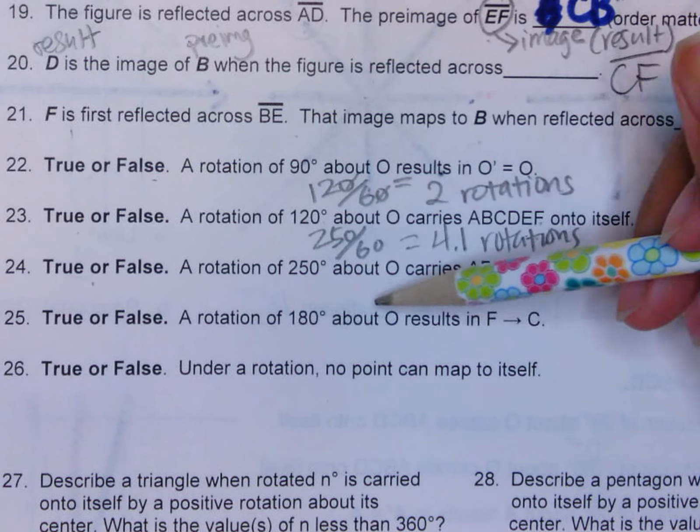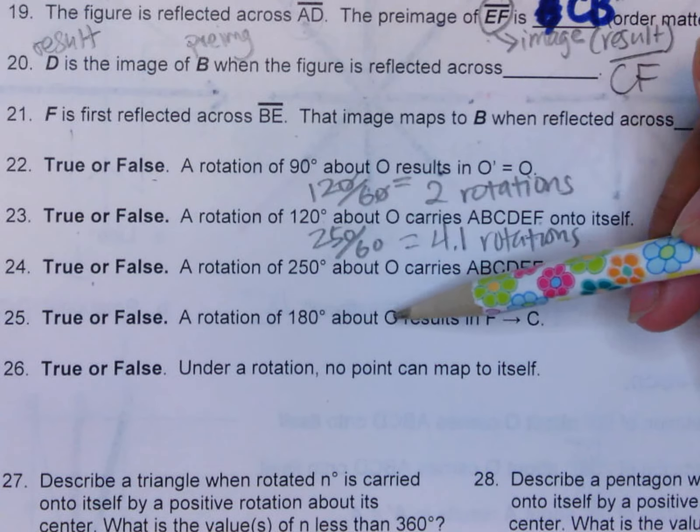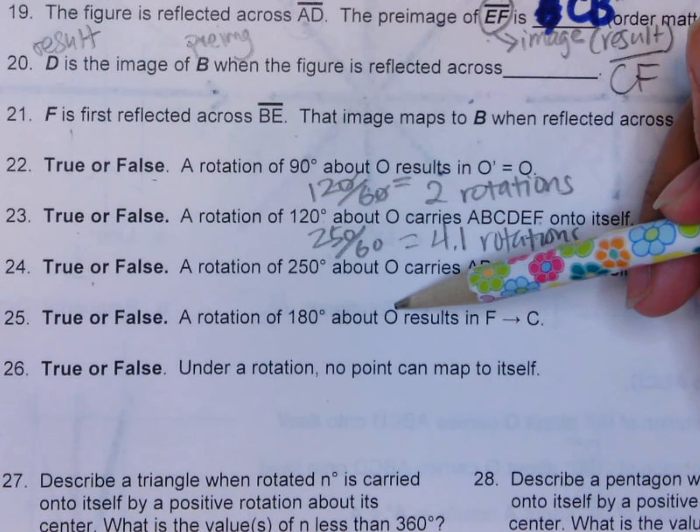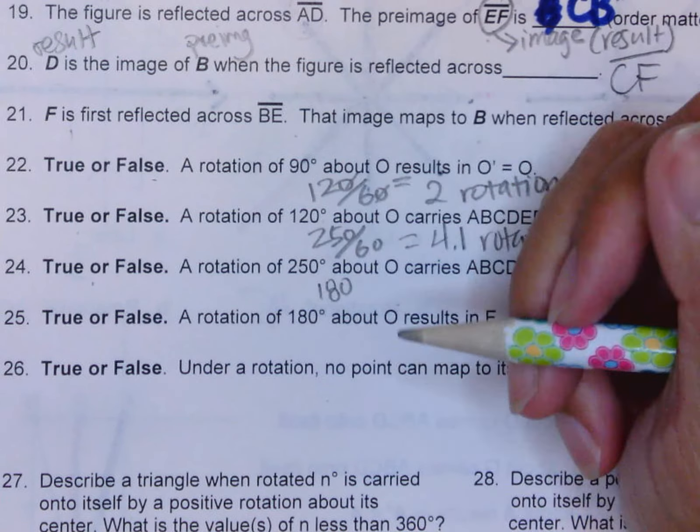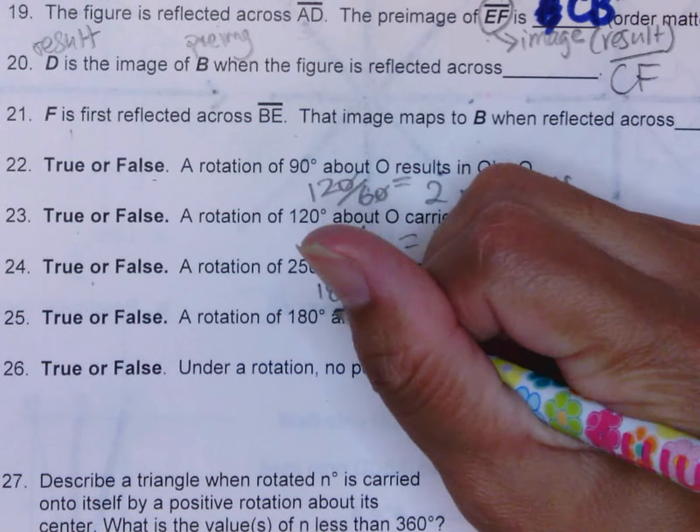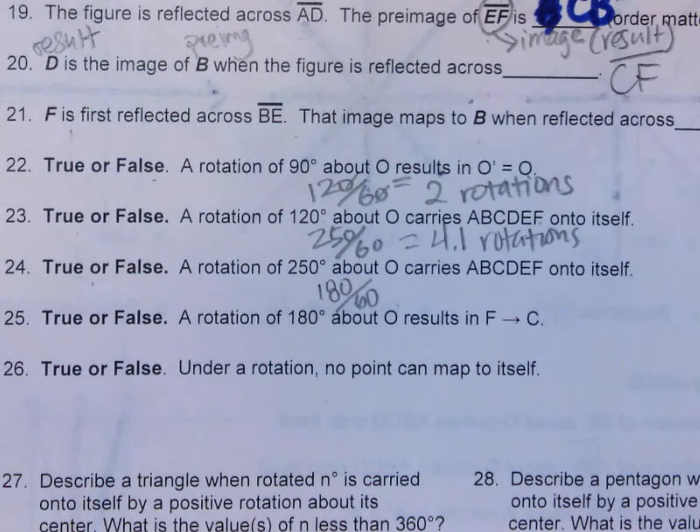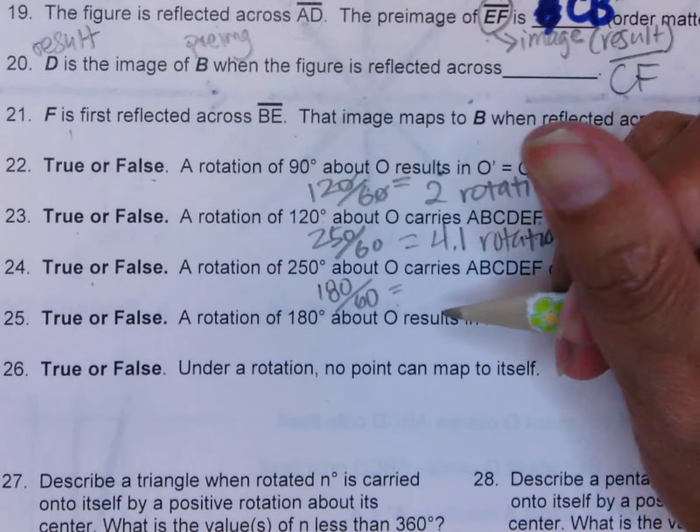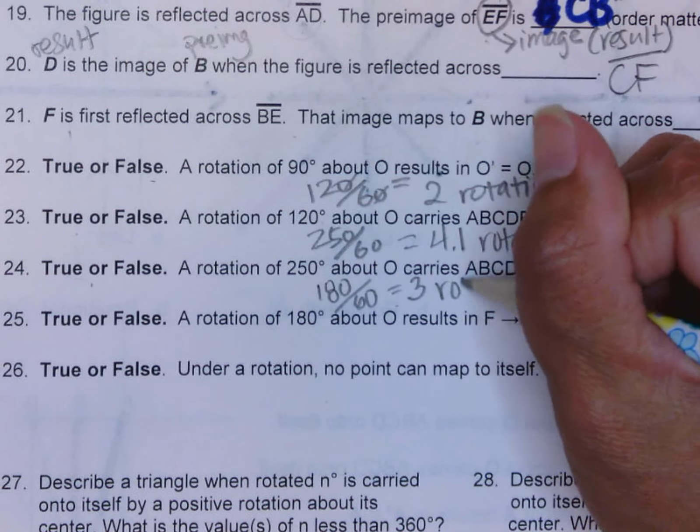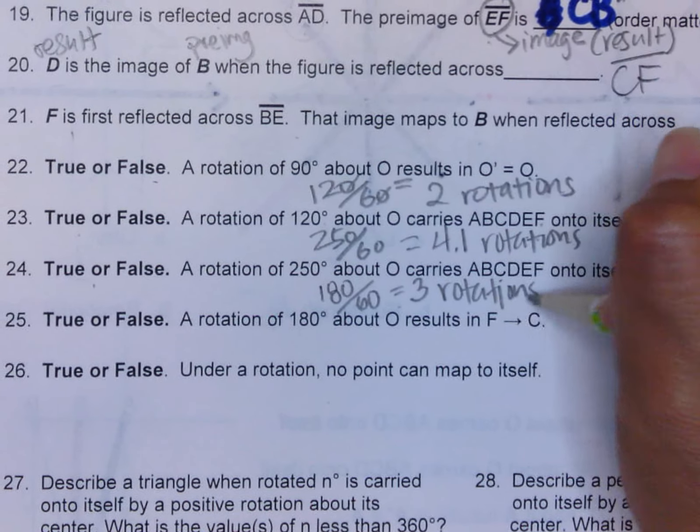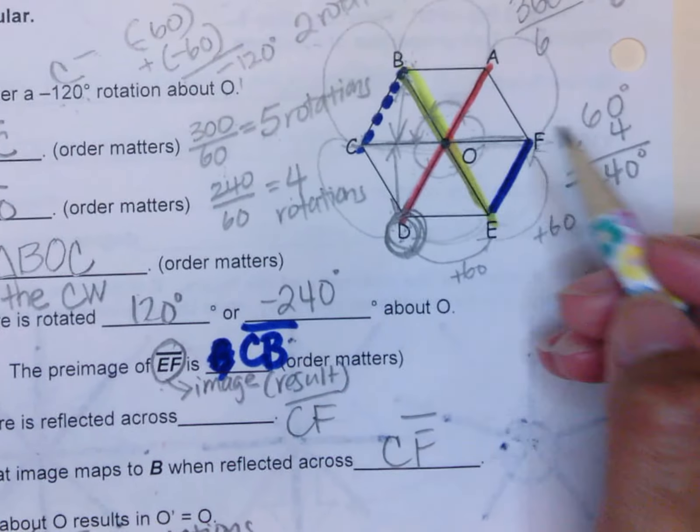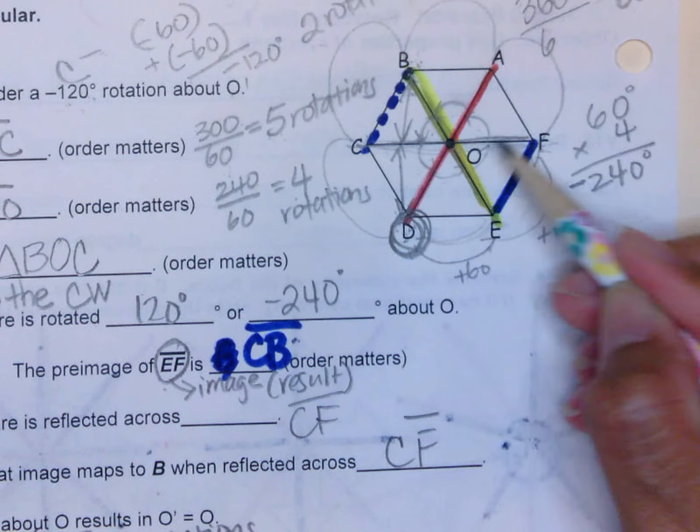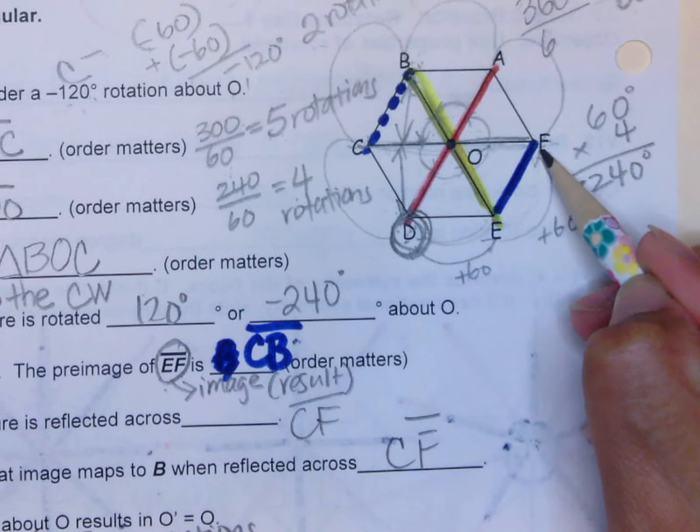Next one, number 25. The rotation of 180 degrees about O will map F to C. Let's see what that means. We have 180 degrees. How many rotations can we get if each rotation is 60 degrees? So that would be three rotations. Let's see if three rotations would get F to C. We're right here, here's our center, here's F. Three rotations, and it's a positive rotation, so we go this way.